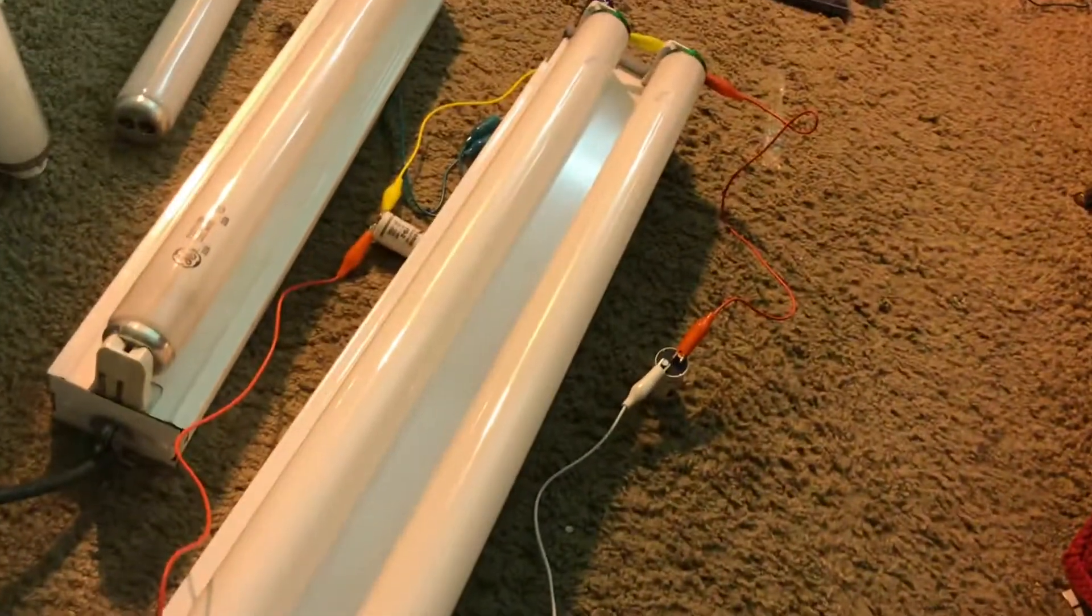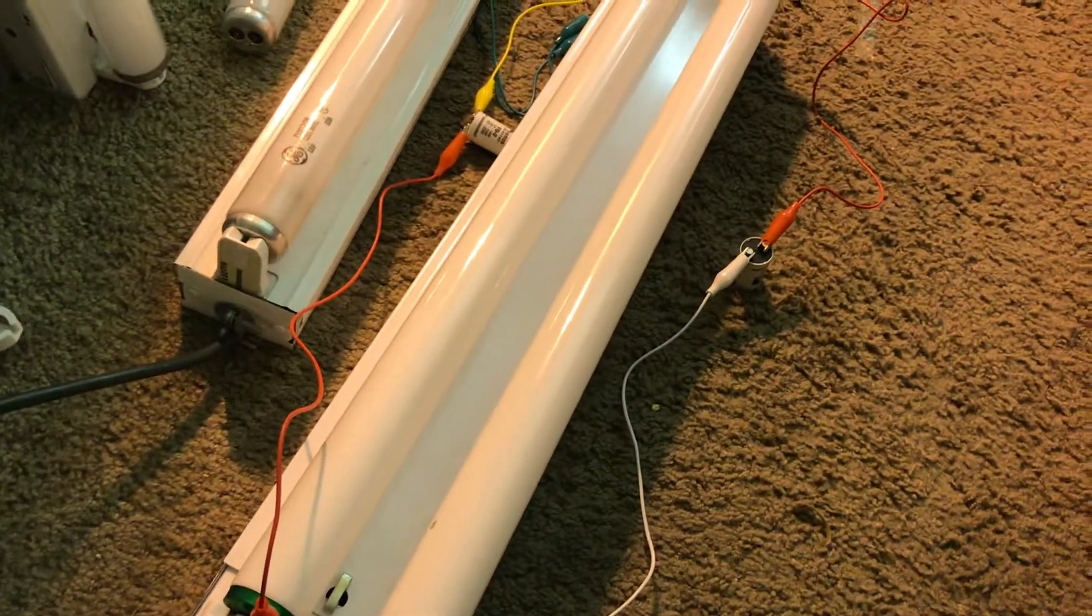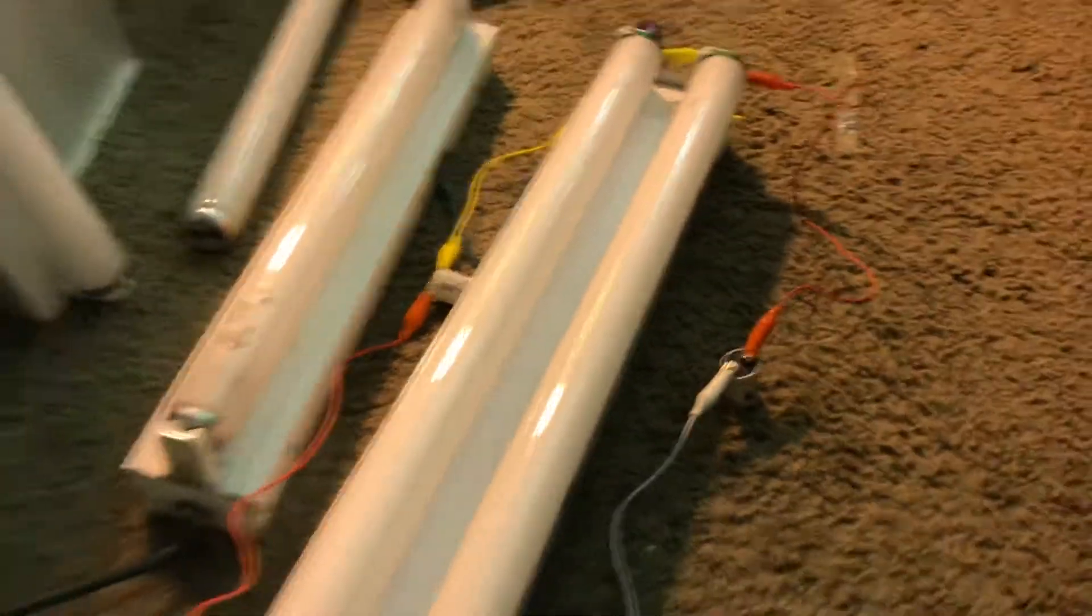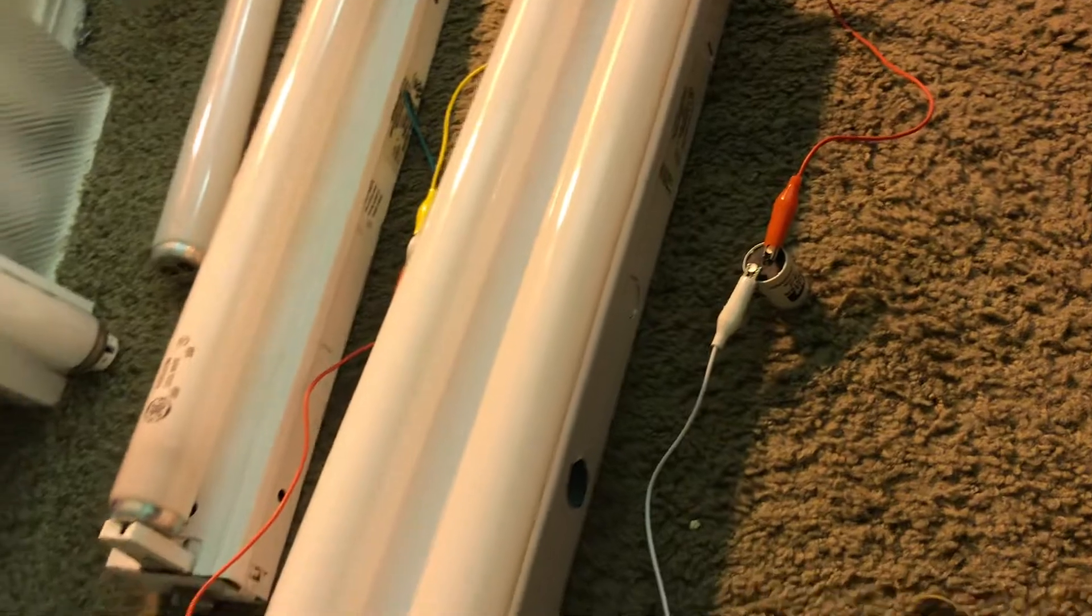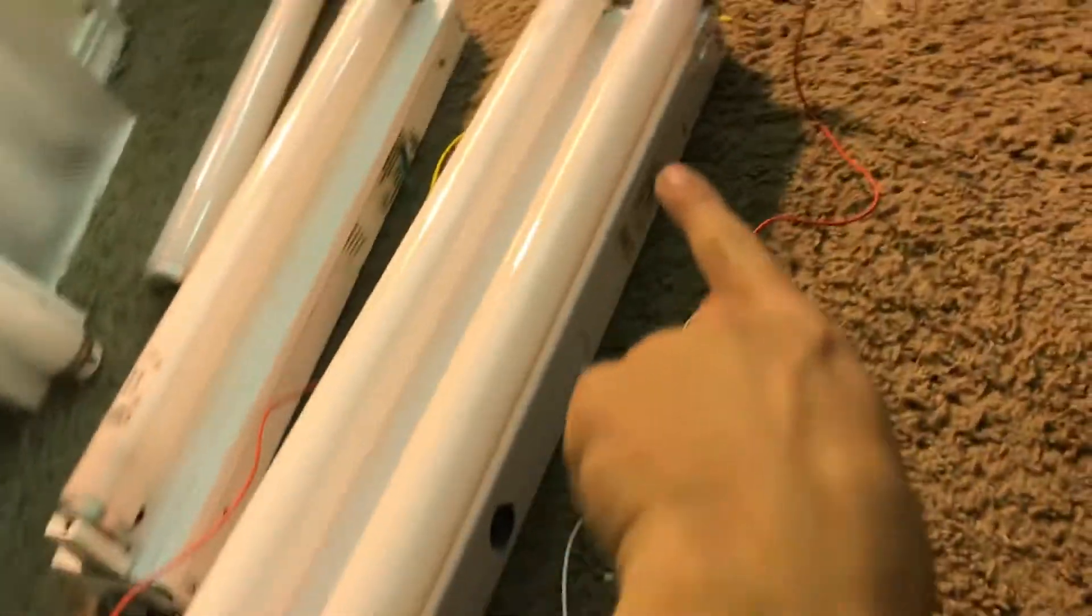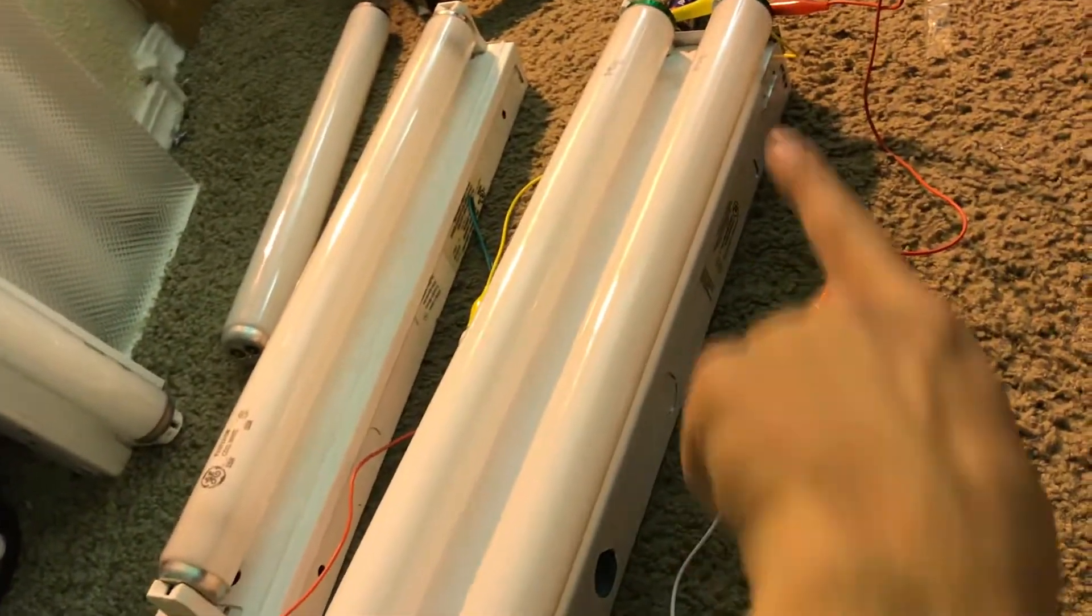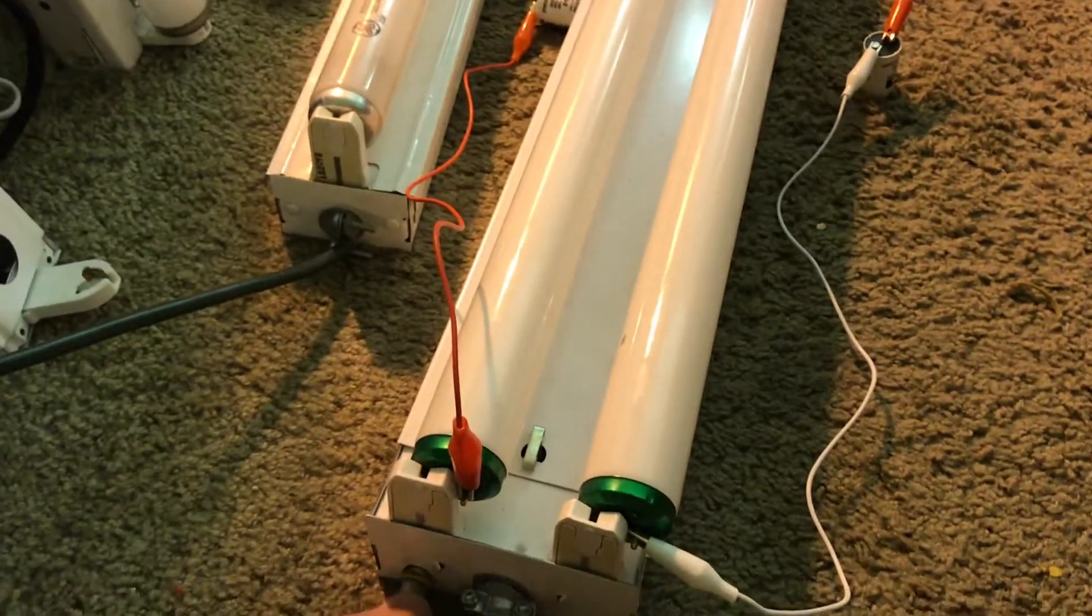Here we have a rapid start fluorescent light fixture and I have tapped starters onto them. So I remove one pin of each lamp and then I connect a starter between one of the pins on each end of the lamp. Now watch what happens when I flip it on.